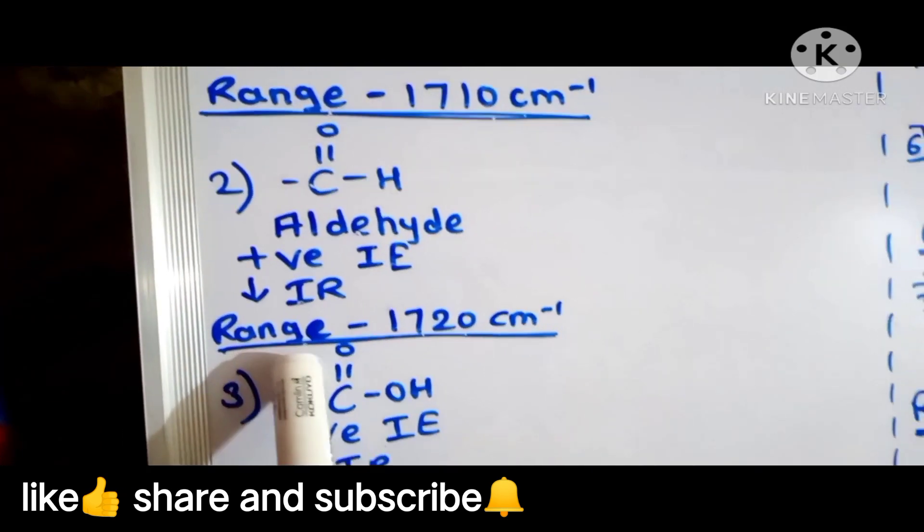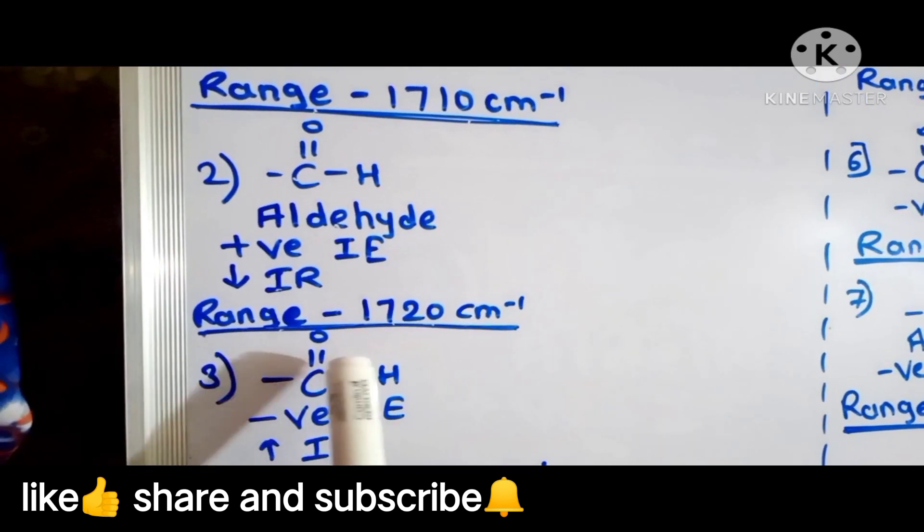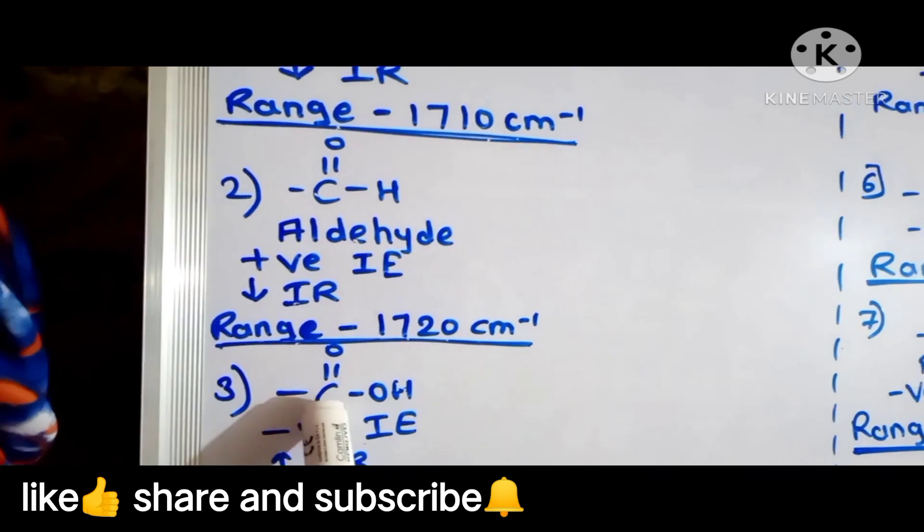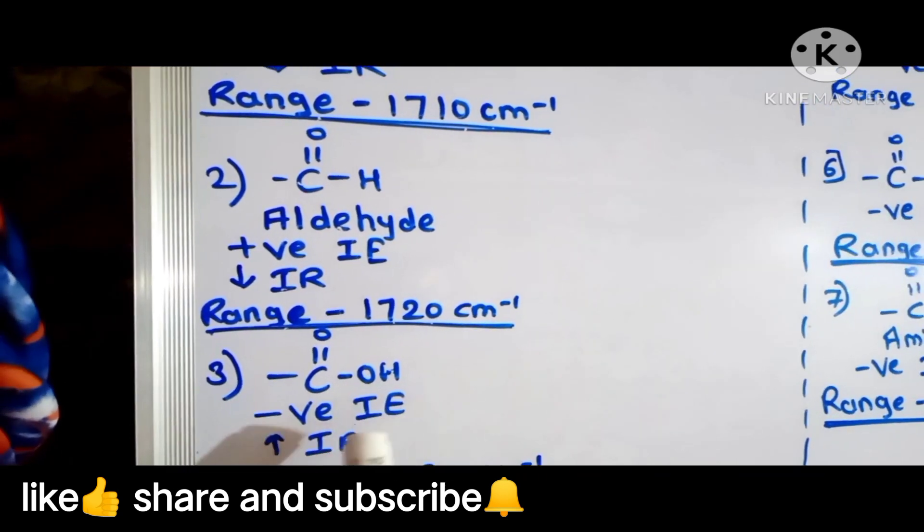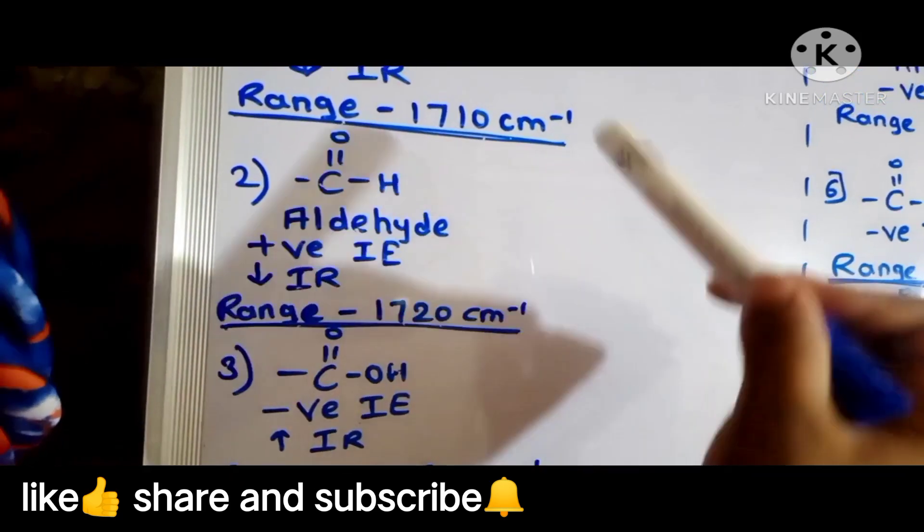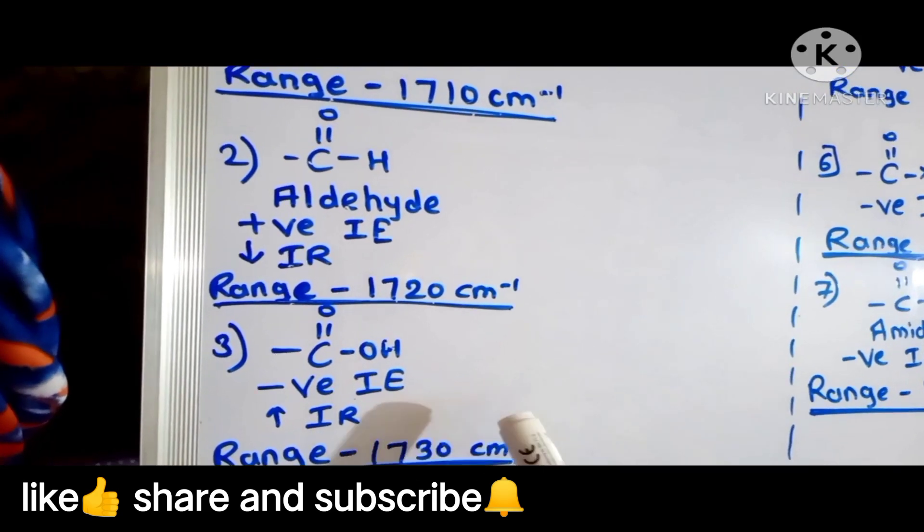Third functional group is the carboxylic acid. It shows negative inductive effect and there is increase in IR range. Range is 1730 centimeter inverse, means from these two ranges, it increases suddenly.